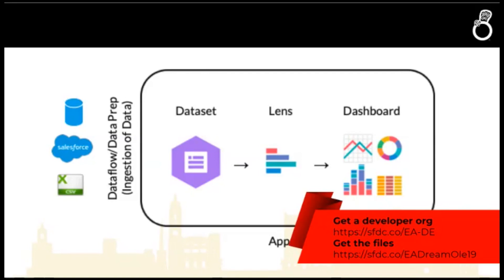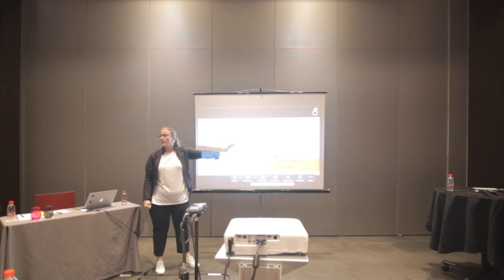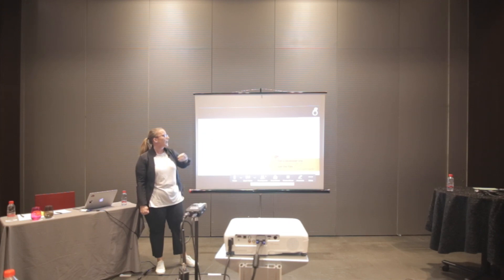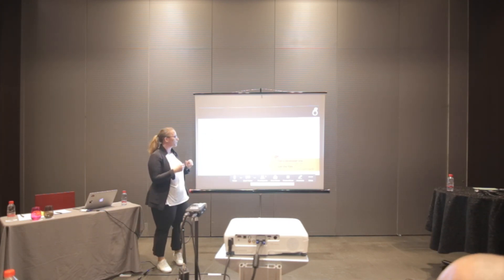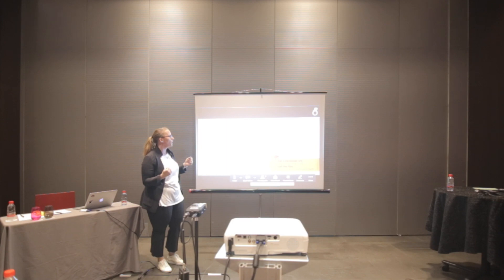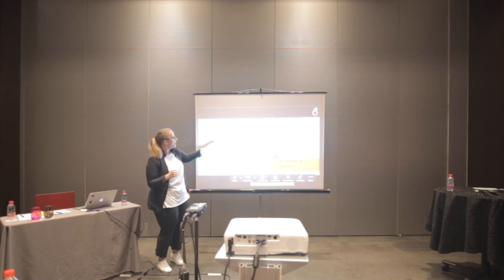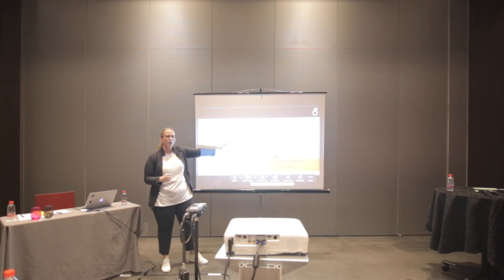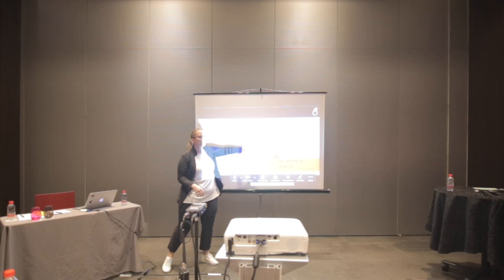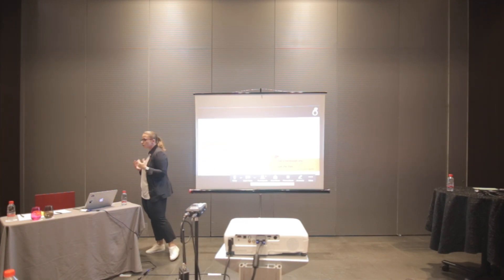Once we have our dataset — that's what we pull out of our data flow — it gets registered as a dataset. We can start exploring it: for example, what is the sum of amount by stage — that's a single exploration and that will be our lens. We also have our dashboard, which is a collection of different explorations put into one dashboard, similar to what we have in core Salesforce. If you're used to standard reports: a dataset is like your report type, a lens is like your report, and a dashboard is your dashboard. All of this is wrapped in an app, similar to our folders, where we store all our assets.